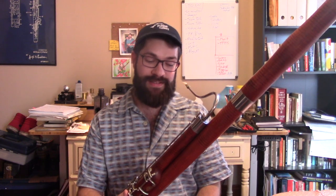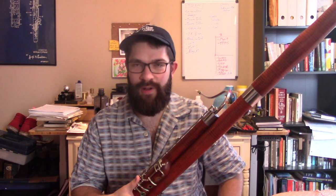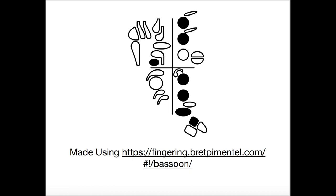As Vince indicated, there's another way to get this low A pitch, which I'd characterize as a band-room bassoon trick. That's with a multiphonic that makes it sound like there's a low A there. The fingering is: left hand one, two, whisper key; right hand one, two, three, and the F key. And it sounds like this.